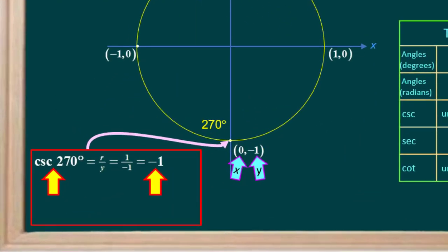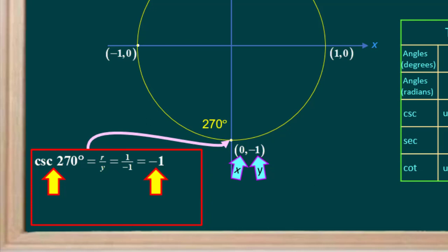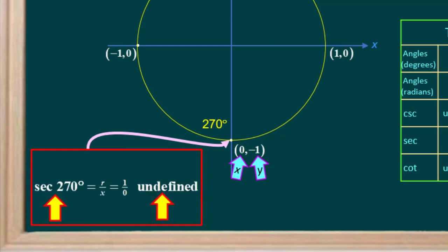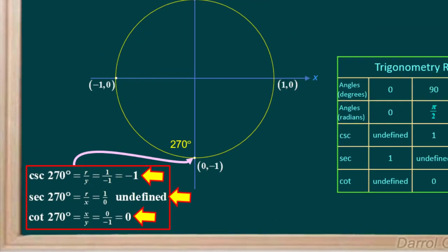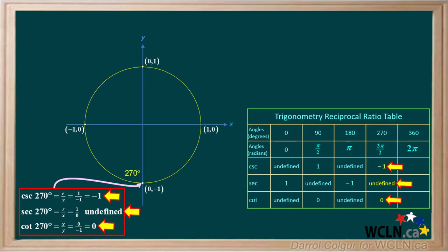We'll go to 270 degrees. The cosecant is r over y, which is 1 over negative 1, or negative 1. The secant is r over x, or 1 over 0, and 1 over 0 is undefined. And the cotangent of 270 degrees is x over y, which is 0 over negative 1, or 0. We'll add the values for the cosecant, secant, and cotangent of 270 degrees to our table.